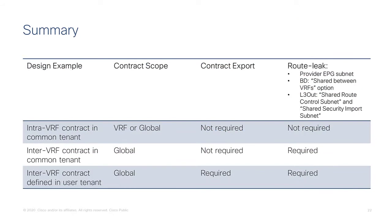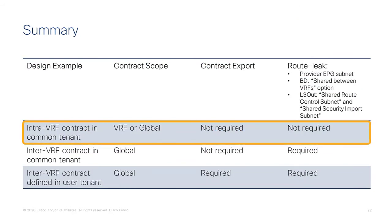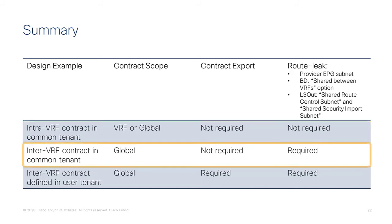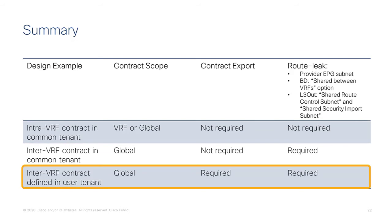To summarize: for an intra-VRF contract between common tenant and a user tenant, the contract scope can be VRF or global — no need to export contracts or configure route leaking. For an inter-VRF contract between a common tenant and a user tenant, the contract scope must be global, but no contract export is needed. Finally, for an inter-VRF contract between two different user tenants where the contract is in one of them, the scope must be global, the contract must be exported, and route leaking is required for VRF sharing.